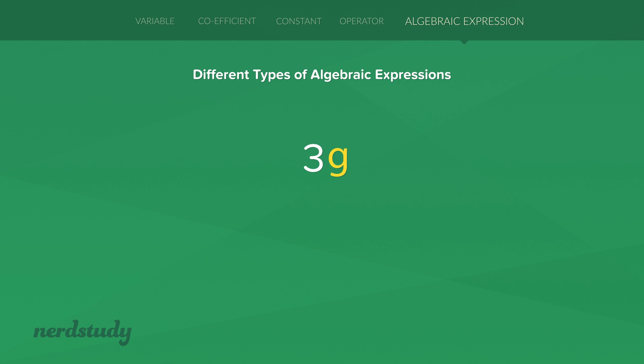As we can see, this algebraic expression has a coefficient and a variable. This one has a division between a number and a variable. And this one has a constant being added with a coefficient multiplied by a variable.